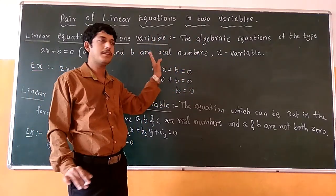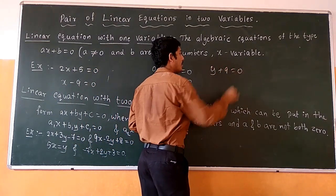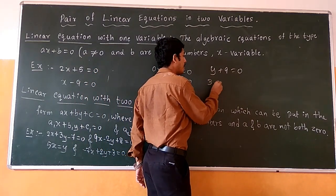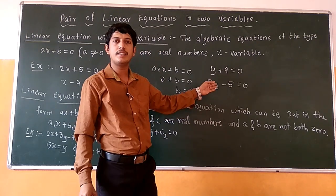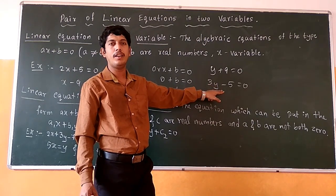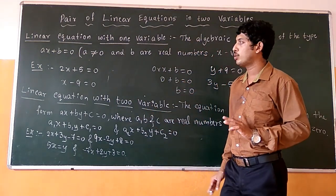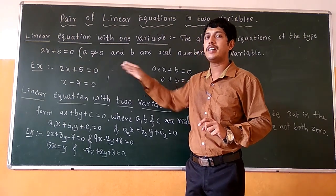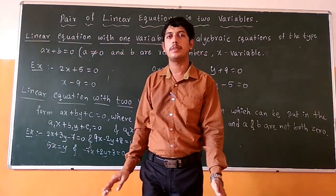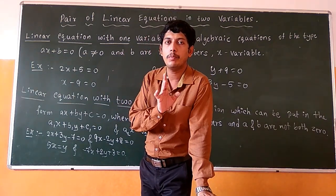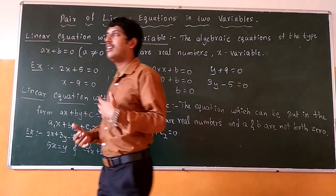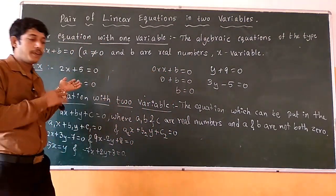So x is a variable in this equation. If we consider another equation, for example, y plus 9 equals to 0 — this is also a linear equation in one variable because it contains a single term. And if we consider 3y minus 5 equals to 0, this is also a linear equation in one variable because it contains only one unknown term. Similarly, we have two equations: 2x plus 5 equals to 0 and x minus 9 equals to 0. In the first equation, x is the variable and 2 and 5 are the real numbers, and it contains only one variable term.